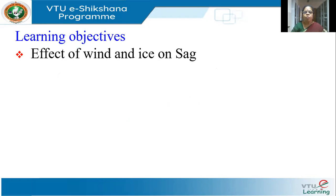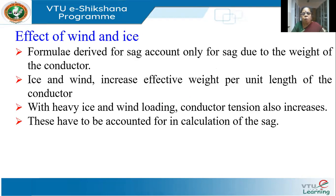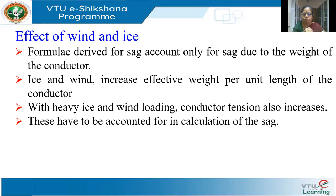In this class we will see the effect of wind and ice on SAG. Wind and ice are very common — ice may not be present everywhere, but wind exists to varying degrees depending on the geographical location. We will derive the formula for how to account for wind and ice when we determine the SAG. If there is a deposition of ice on the conductor, the weight of the conductor will increase. Wind will try to give a lateral force to the conductor, and we have to account for these when calculating SAG.